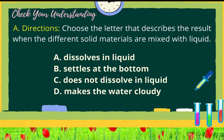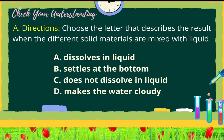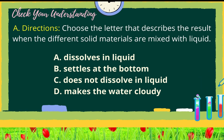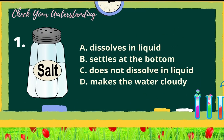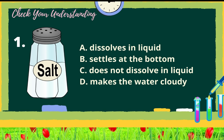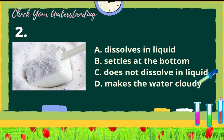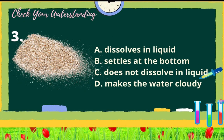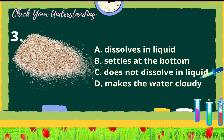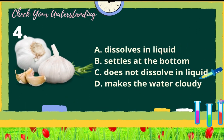Have you answered all the questions right? Okay, great. Let us now check your understanding. Choose the letter that describes the result when the different solid materials are mixed with liquid. One: iodized salt. Two: powder detergent. Three: sand. Four: garlic. And number five: sugar.